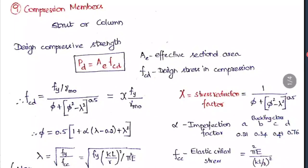The formula for design stress in compression is given. These problems are lengthy but they won't be asked in objective questions; however, studying and remembering the formula is important as they may sometimes ask about it. FCD = FY / (gamma_MO × (phi + (phi² − lambda²)^0.5)), where FY is the yield stress, gamma_MO is the partial safety factor, and lambda is the slenderness ratio.